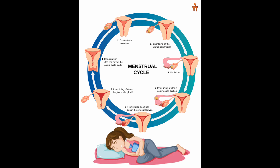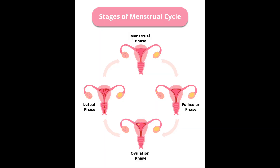Heavy menstrual bleeding, previously known as menorrhagia. If left untreated, this can cause anemia. Treatment options include oral contraceptives and a hormonal intrauterine device to regulate the flow.